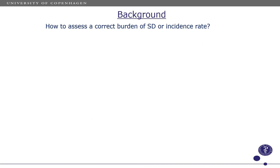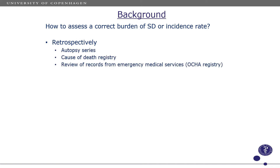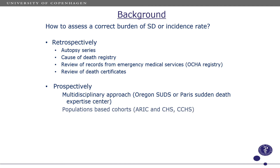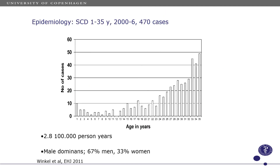How do we assess the correct burden of sudden death or incidence rates? Here I have listed some retrospective methodology and prospective methodology. One such study performed by our group shows the crude number of cases in a seven-year period, with an age range of 1 to 35, which is what most groups use for sudden cardiac death in the young — some go up to 40 or even 50. In this study we found an incidence rate of 2.8 per 100,000 person years.